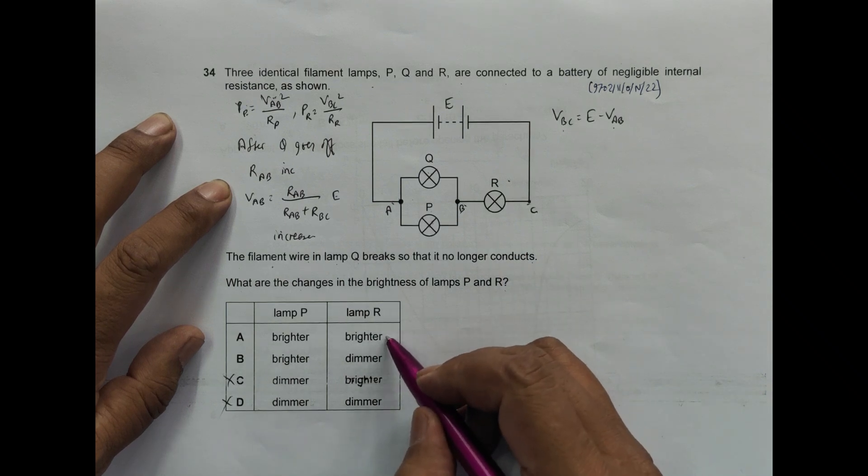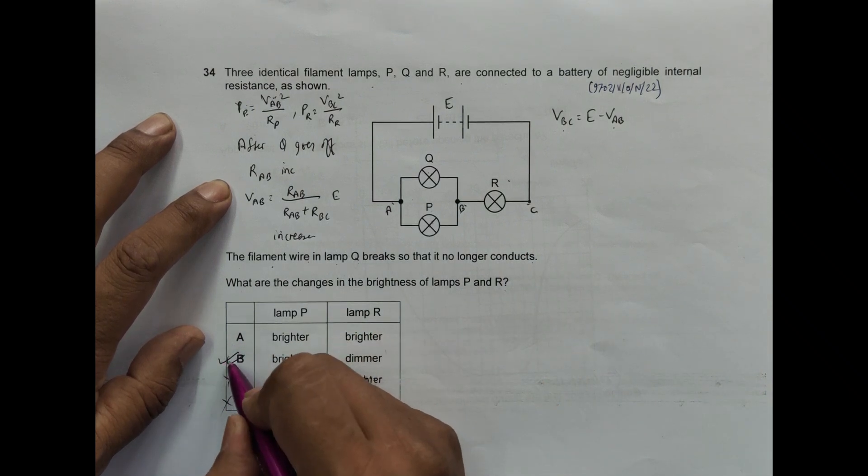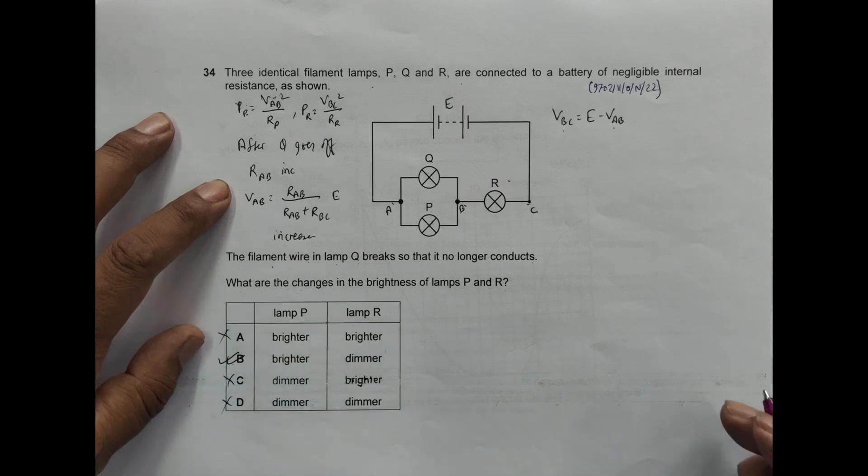So the choice which says dimmer is choice number B. So B is the correct choice and A is the incorrect choice.